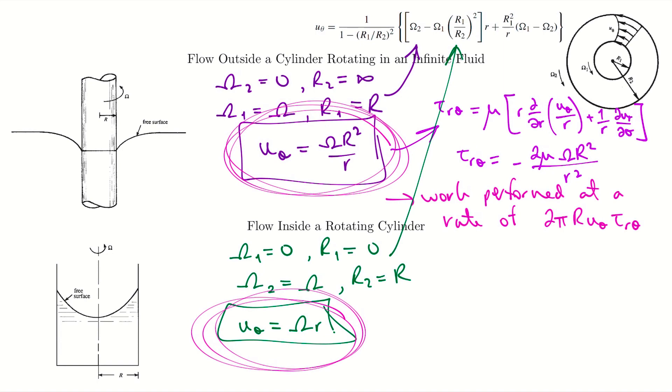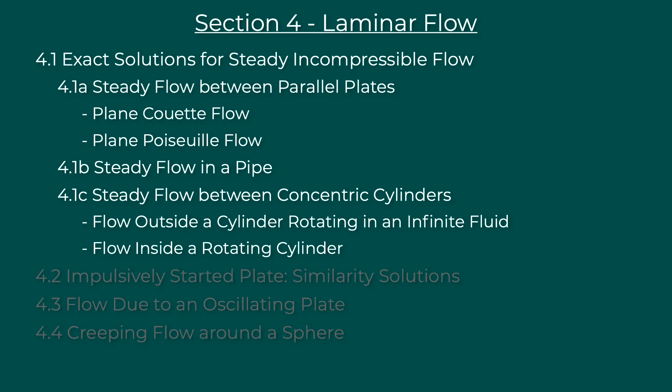We'll wrap up video six there. Those were our exact solutions for steady incompressible flow for a number of different geometries — video seven will look at a few more solutions. To summarize: in this video we started section four on laminar flow, and that's because for laminar flow we can get exact solutions to our conservation laws. We looked at solutions for flow between parallel plates, flow in a pipe, and flow between concentric cylinders, including special cases of each. Essentially, we took the conservation laws, simplified those equations to get exact solutions, and those solutions gave us velocity profiles showing how the flow behaves physically.